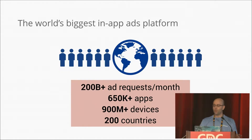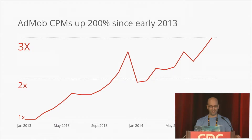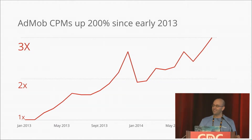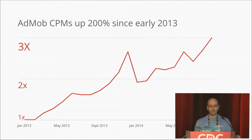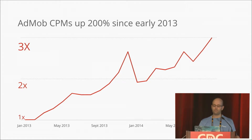We have totally relaunched AdMob since 2013 — interstitials, video, analytics. The result? Our CPM, which is the price paid to developers, has tripled. AdMob has paid out more than $1 billion to developers in the last two years.